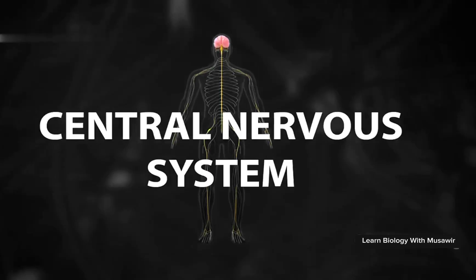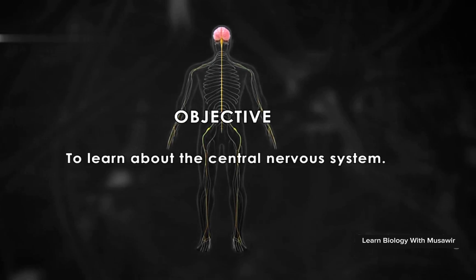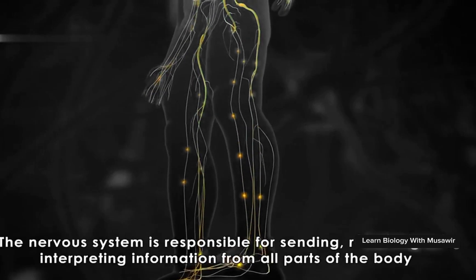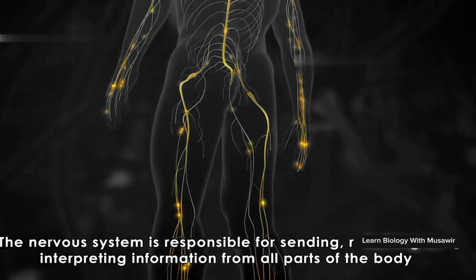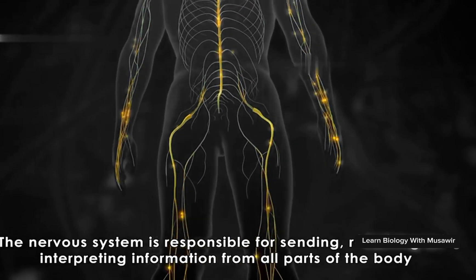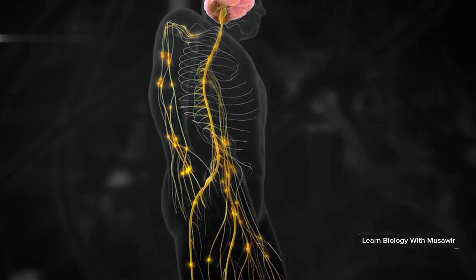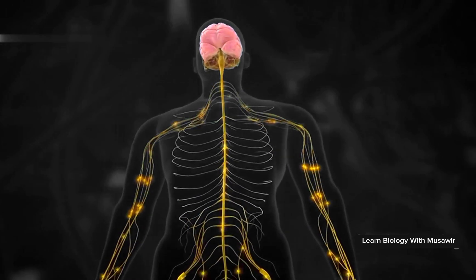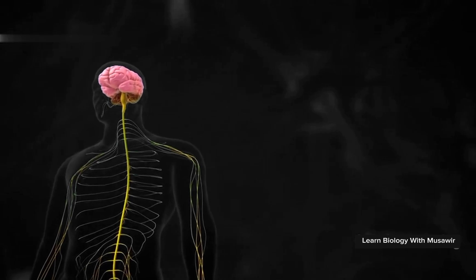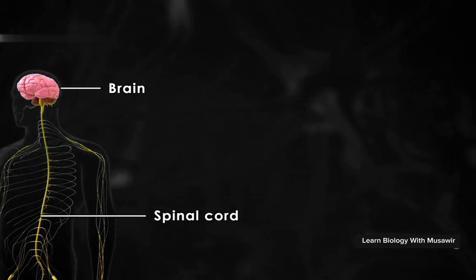The central nervous system. Objective: to learn about the central nervous system. The nervous system is responsible for sending, receiving, and interpreting information from all parts of the body. It responds to external stimuli and monitors and coordinates the functions of internal organs. The central nervous system is composed of the brain and spinal cord, both enclosed in protective layers.